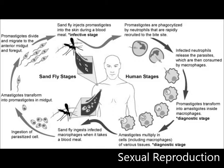The newly developed amastigotes multiply in various tissues. As soon as another female sandfly ingests the infected macrophages, the amastigotes can then develop further in the midgut and foregut, concluding one life cycle. The result: a quickly infected population.